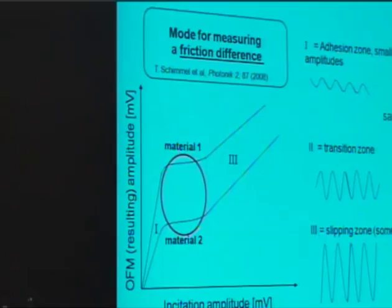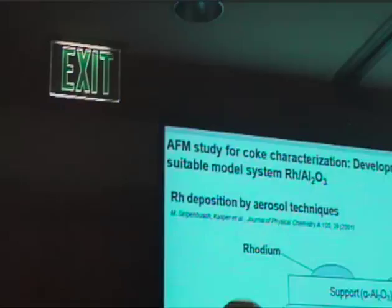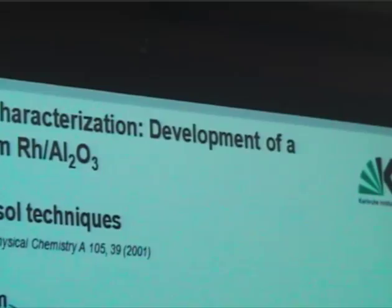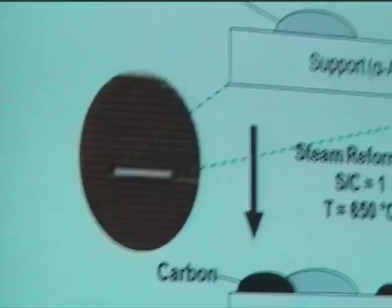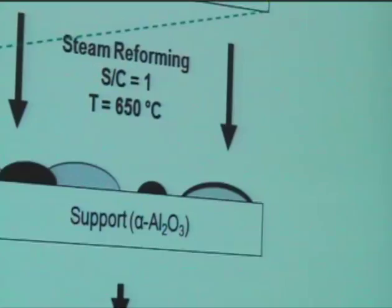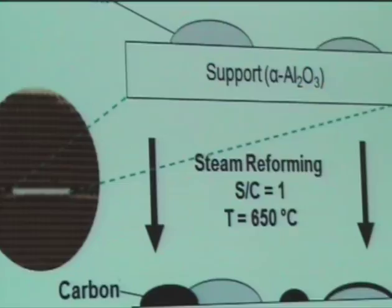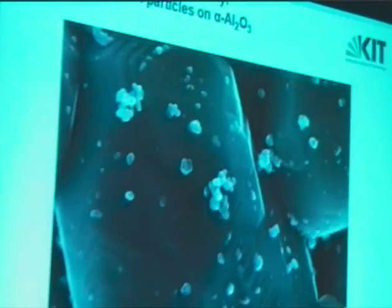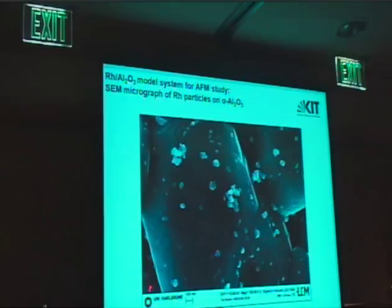For that we created a model system consisting of a thin alpha-alumina disc on which rhodium particles are deposited. We performed atomic force microscopy and oscillation friction mode measurements, then placed the sample into a monolithic honeycomb and put this model system through the steam reforming process of natural gas at a steam to carbon ratio of 1 and a temperature of 650°C. After the reaction we performed AFM and friction measurements again. This scanning electron micrograph shows the model system, with alumina grains of about 1 to 3 microns and deposited rhodium particles with diameters from 20 to 80 nanometers.